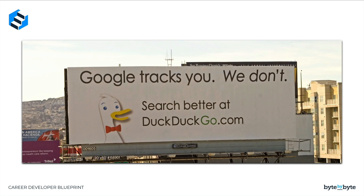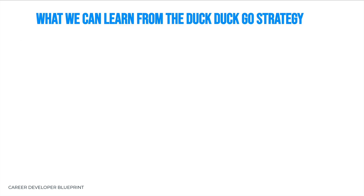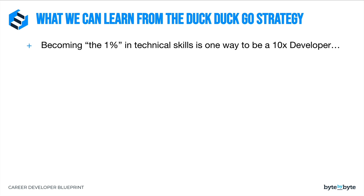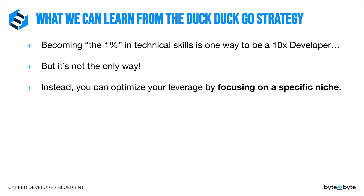DuckDuckGo has done over a billion searches in a month, integrates with Safari and Firefox. How did they survive? How did they actually thrive in a market that was already so saturated, where there was already such a dominant player? The key was that they picked a small niche of the market — which was privacy — and they focused on that. What we can learn from this strategy is that becoming the top 1% in technical skills is one way to become a 10x developer, but it's not the only way. Instead, we can optimize our leverage by focusing on a specific niche.